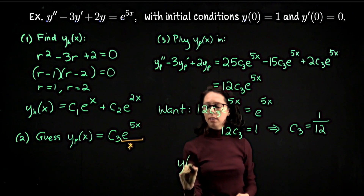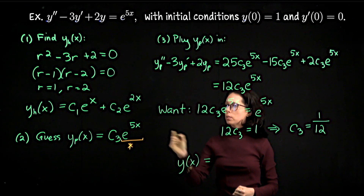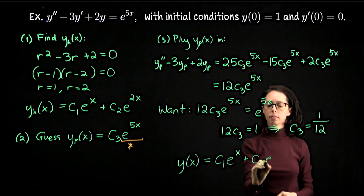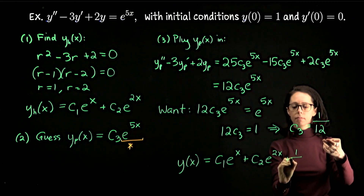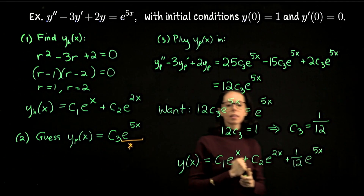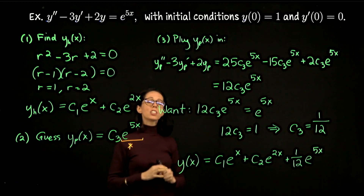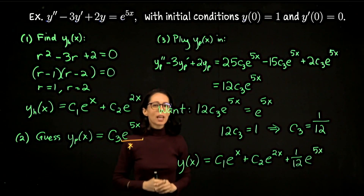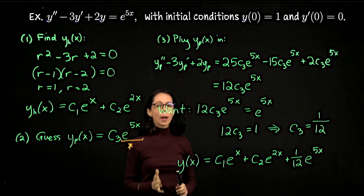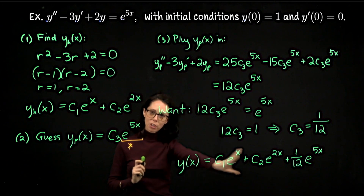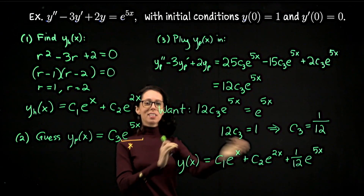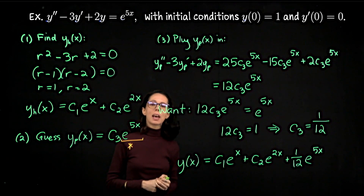The general solution is y of x equals c1 e to the x plus c2 e to the 2x plus one-twelfth e to the 5x. At this point we're done with the method. We will now wrap up by solving for the particular version that satisfies the initial conditions y of 0 equals 1 and y prime of 0 equals 0.